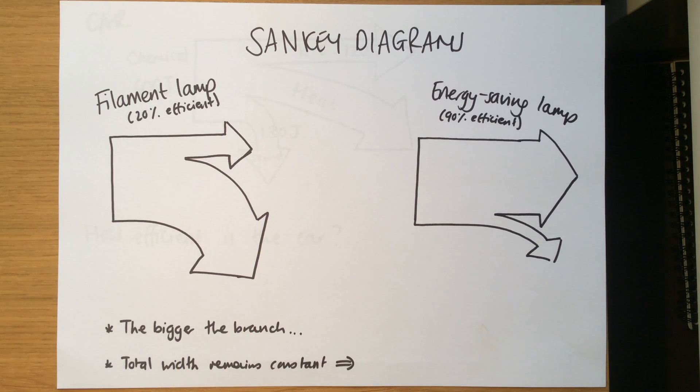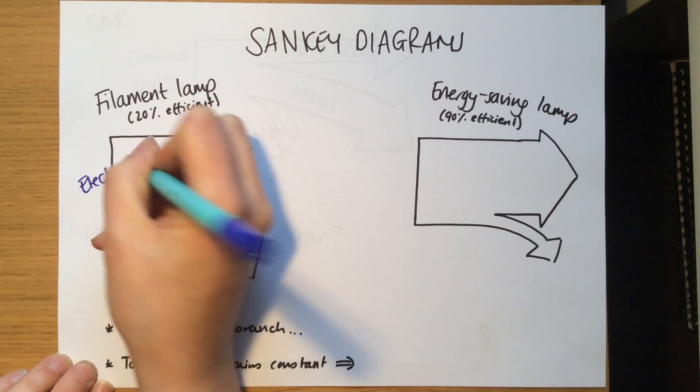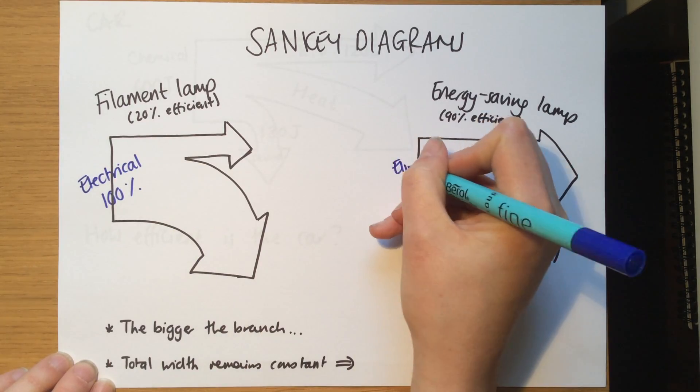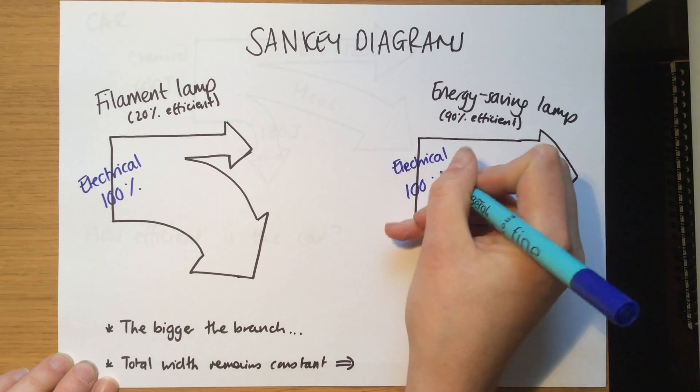Now a Sankey diagram tells us about how much energy goes in and how that energy is used. For both types we start with electrical energy, and we're going to write 100 percent. They all use completely electrical energy, they don't use anything else, so it has to be 100 percent to start because you can't start with anything less.